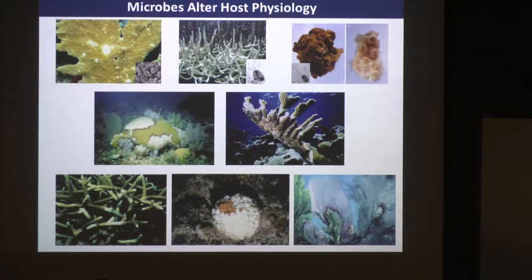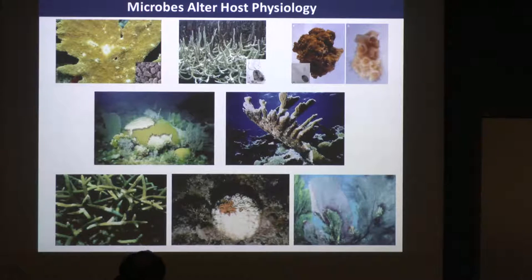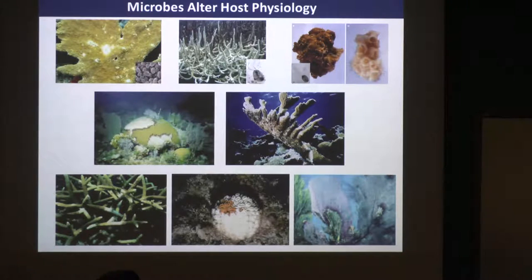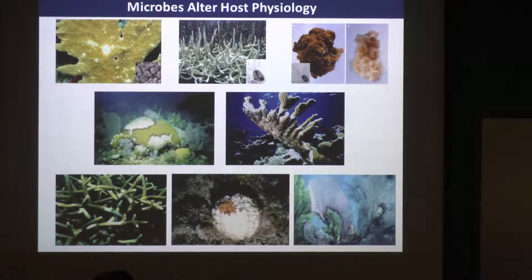We've got white band diseases also plaguing acroporid corals, white plague, and aspergillosis of coral sea fans — a soil-based fungus that's made its way into the marine environment and started causing disease in these gorgonian sea fans. It's clear that microbes have the potential to either benefit their hosts and structure the overall composition of the holobiont, but also, if corals are already compromised, we may get alterations to their physiology to their detriment as well.